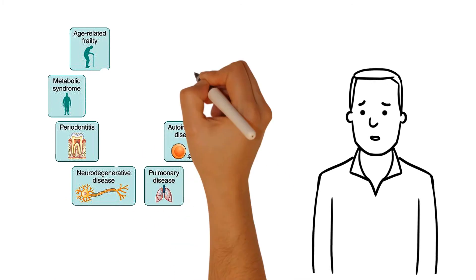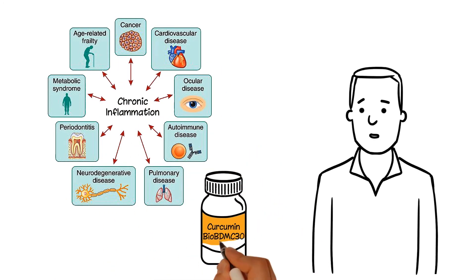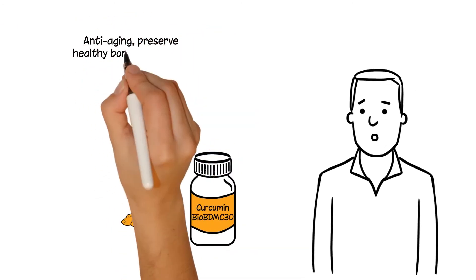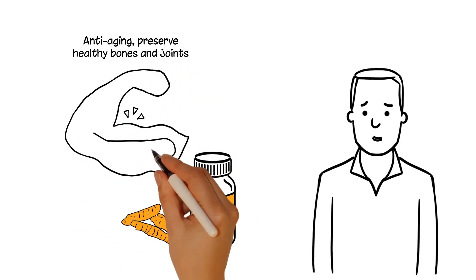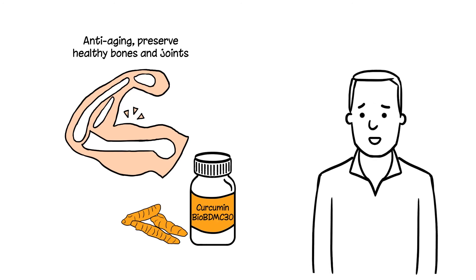Curcumin BDMC30 is ideal for relieving chronic inflammation and joint pain, as well as supporting immune system efficiency. Plus, it helps support anti-aging, preserve healthy bones and joints, and its effects take hours to feel instead of the days it can take regular curcumin to deliver results.